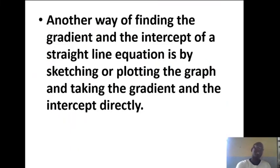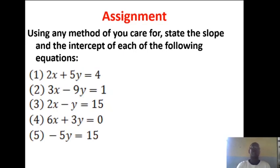Another method is by plotting the graph itself — sketching or plotting the graph and taking the gradient and the intercept directly. That is the next thing you will see after this class. For the assignment, you are going to use the method I demonstrated to answer the following questions. Remember, either the intercept or the gradient can be 0, negative, or positive — 0 is a number in the number system, the center of the positive and the negative.